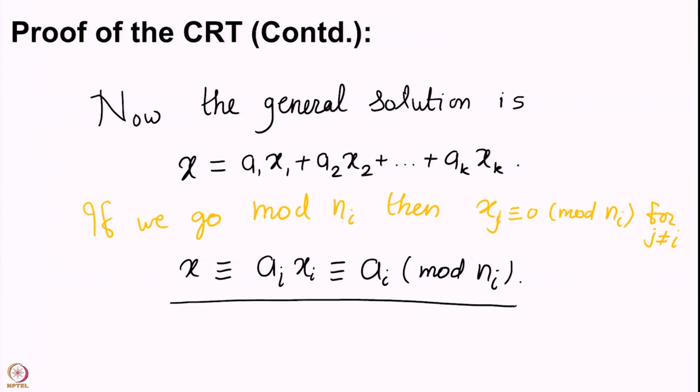Once again, we solved very special systems giving 1 mod a particular ni and 0 mod all other nj's. The solution is a multiple of the product of those nj's. Using the property that since each nj is co-prime to ni, the product of nj's is also co-prime to ni, we have a solution to each special system, and then we have the general solution. Now that we have proved existence, we go towards proving uniqueness.